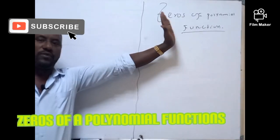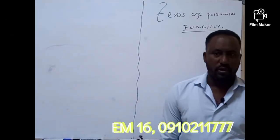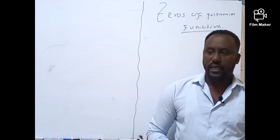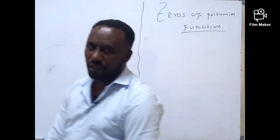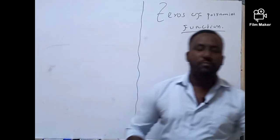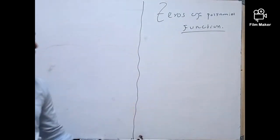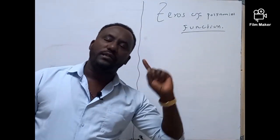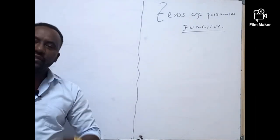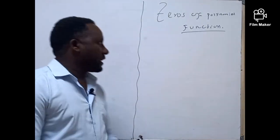First and foremost, I need to know: what is zero of the polynomial? Are you familiar about zeros of the polynomial? Do you know the zeros for the polynomial? That's the point. I'm going to explain the zero of the polynomial — how can we find the zero of the polynomial, and what does zero mean in general? What is zero of the polynomial?